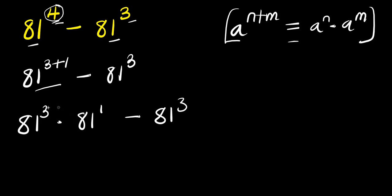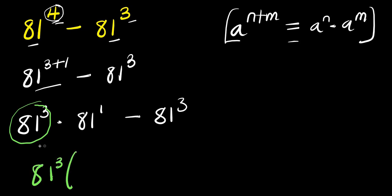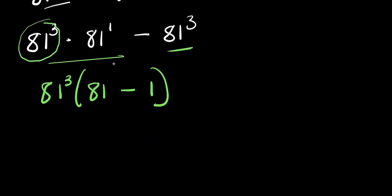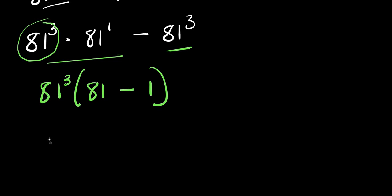From here we can factor out eighty-one to the power three. So we are going to have eighty-one to the power three times, in brackets, eighty-one to the power one — which is the same thing as eighty-one — minus one, since eighty-one to the power three divided by eighty-one to the power three gives one.